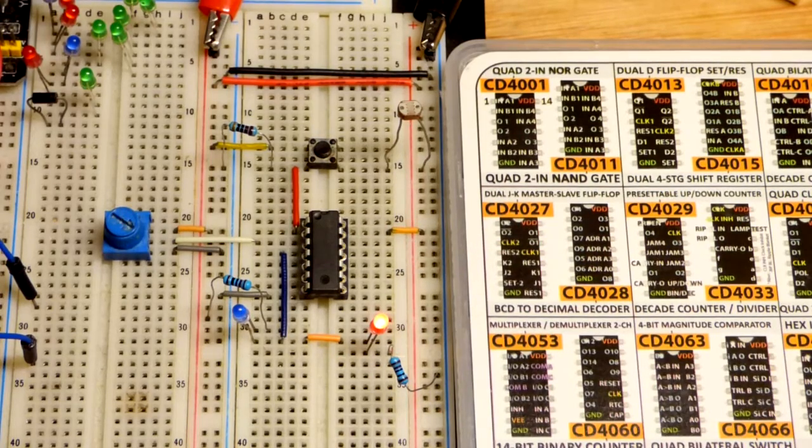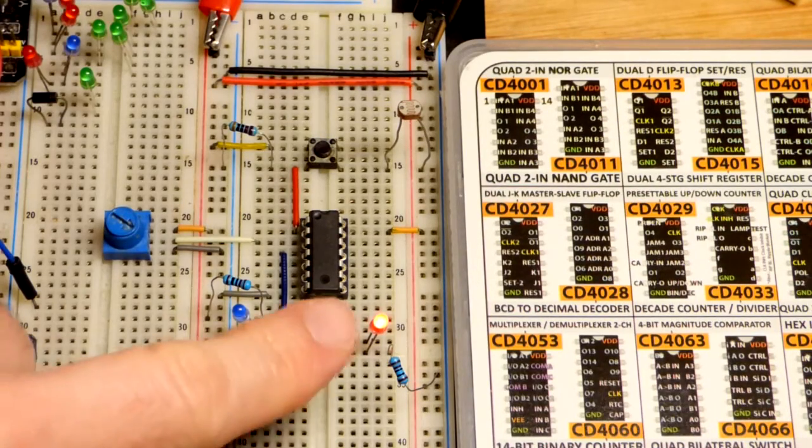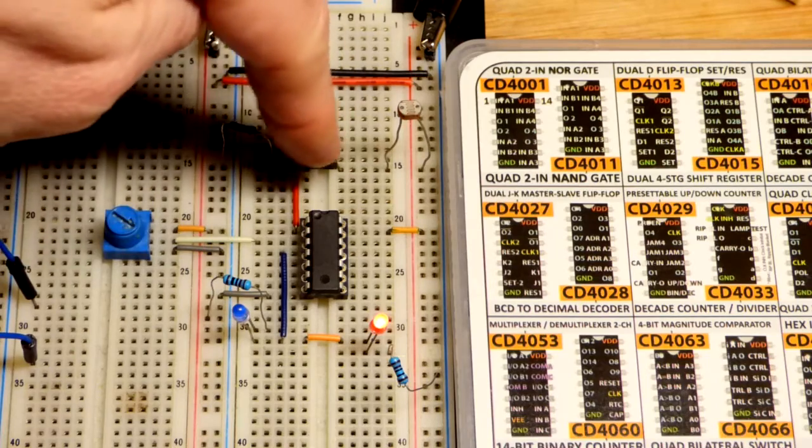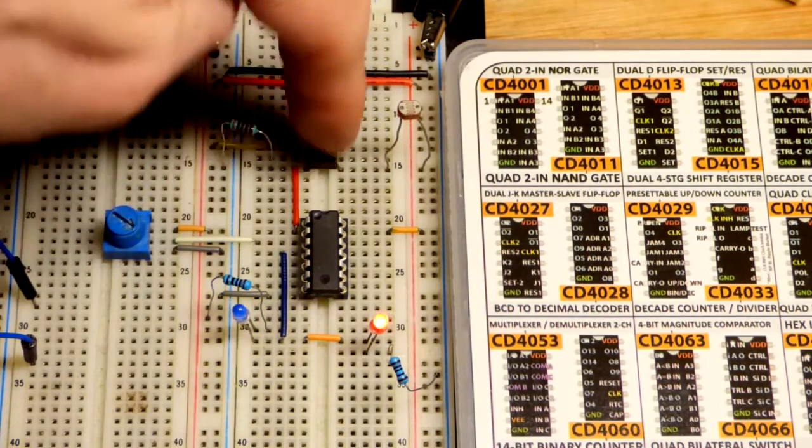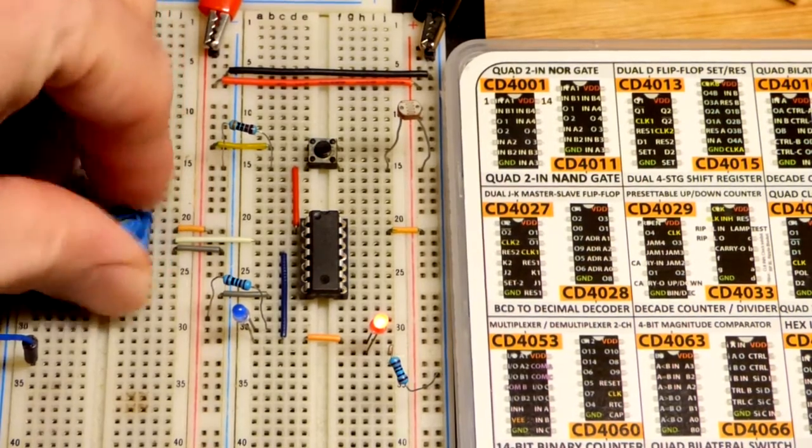It's a NOR logic gate, which means the only way the output is high and the red LED is lit is if both inputs are low, which they are now. If I set that input high, you can see we have a low output with the blue LED.